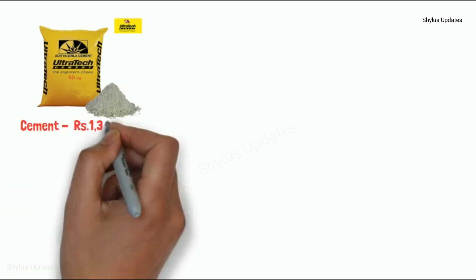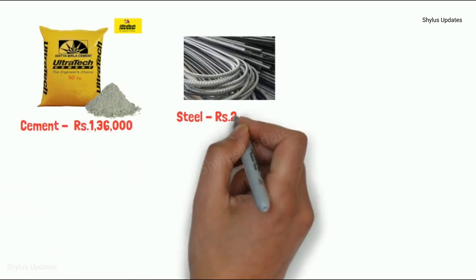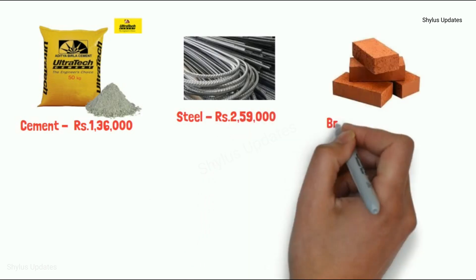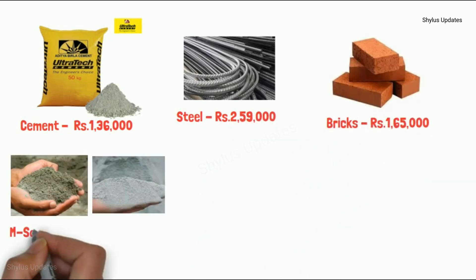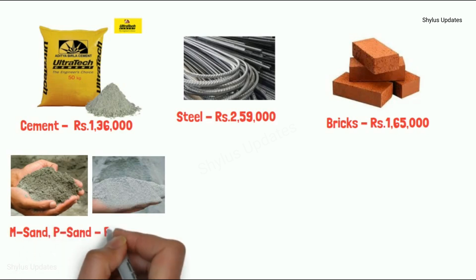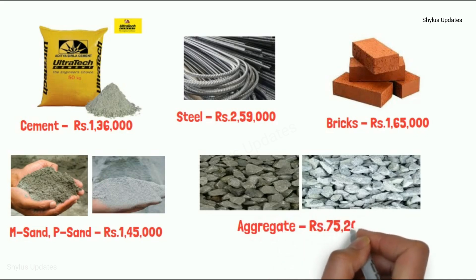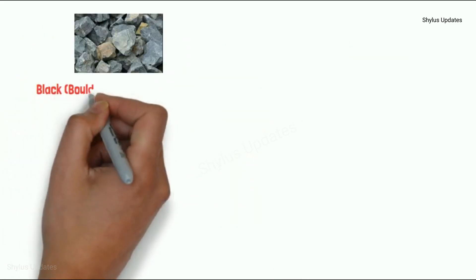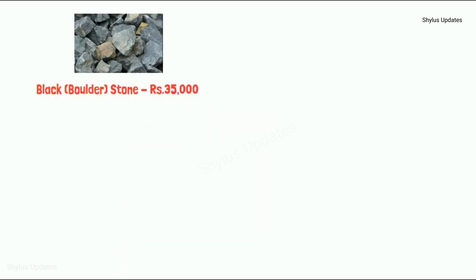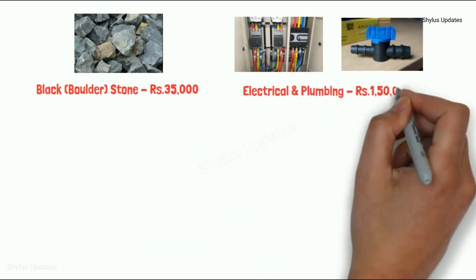Therefore for an 850 sq ft house: cement is Rs. 1,36,000; steel Rs. 2,59,000; bricks Rs. 1,65,000; M-Sand and P-Sand Rs. 1,45,000; aggregate Rs. 75,200; black stone Rs. 35,000; electrical and plumbing Rs. 1,50,000.